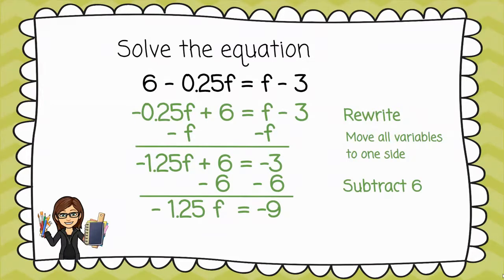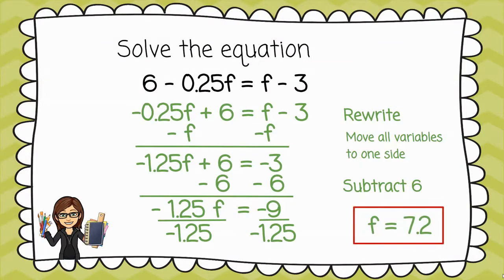And then, I'm going to do the opposite of multiplying by 1.25, which is to divide by negative 1.25. Definitely, I'm going to pull out my calculator for this one to do the negative 9 divided by negative 1.25. And I get that f is 7.2.